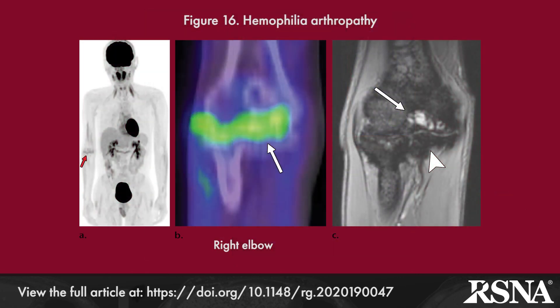Finally, hemophilia arthropathy, secondary to repeated joint bleeding, frequently affects the knees, elbows, ankles, hips, and shoulders asymmetrically.